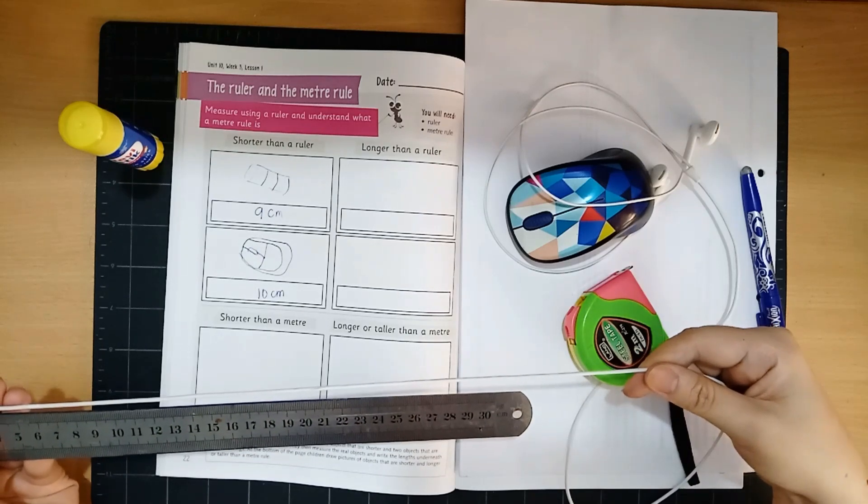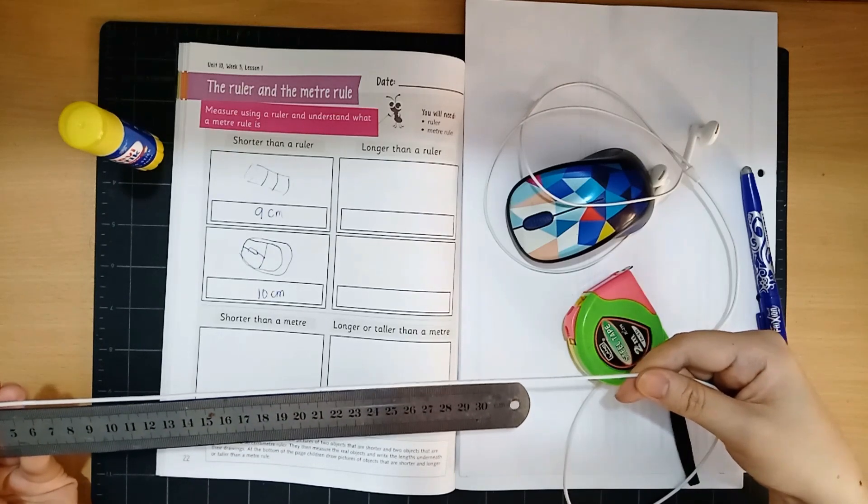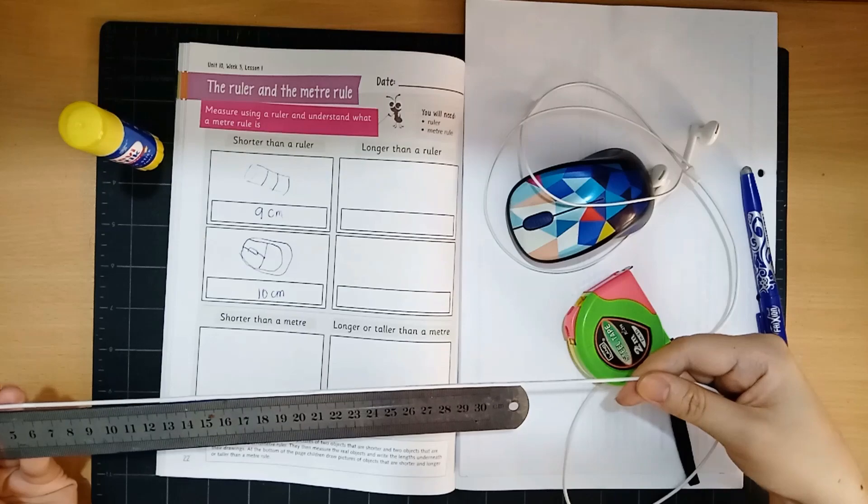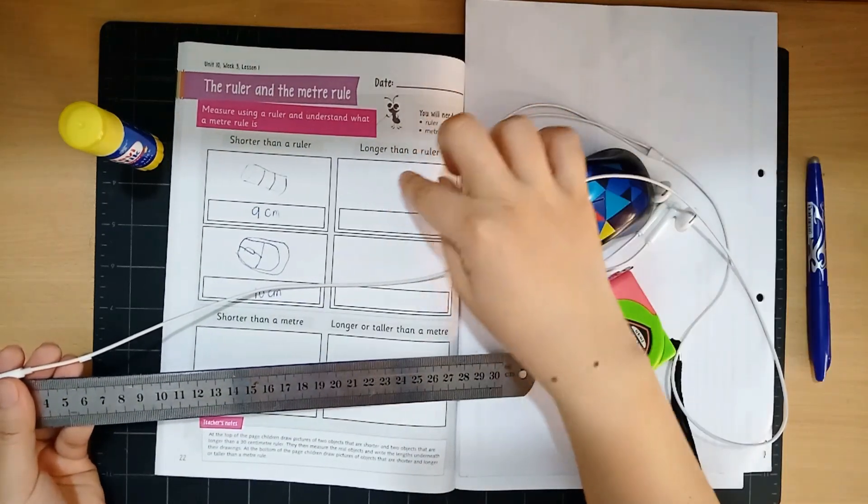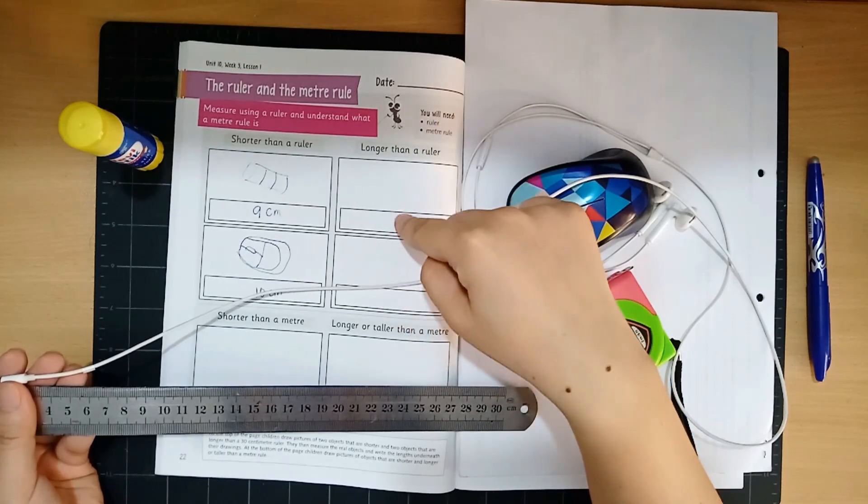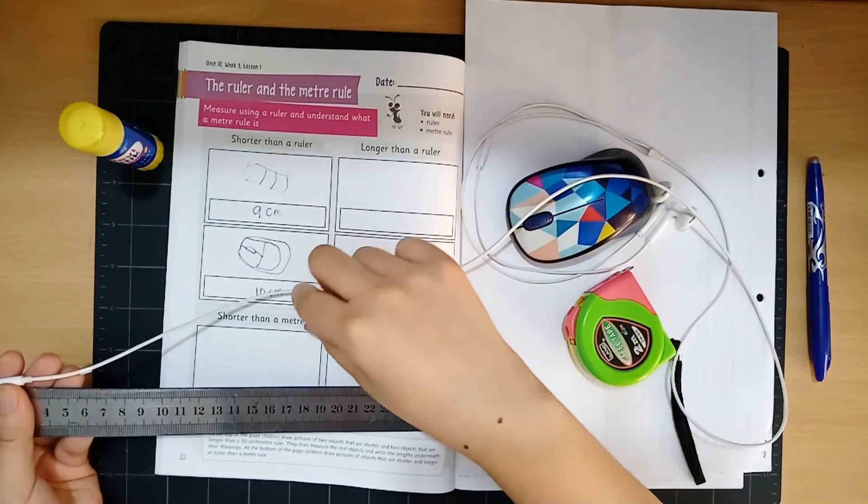We will use a meter ruler for this and you will need your parents help to measure your longer things. So you will draw your longer things here and then you're going to write how long is it in centimeters.